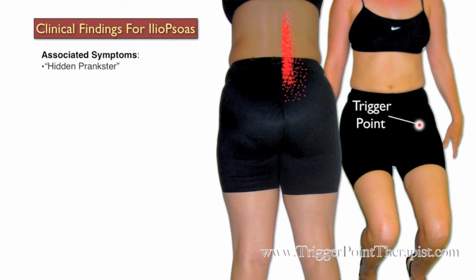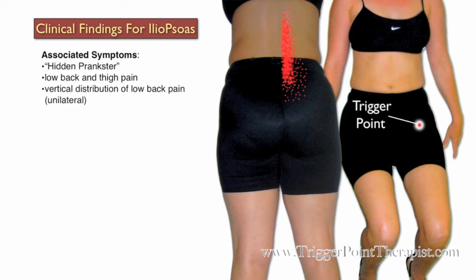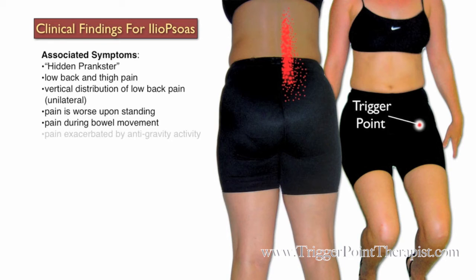Clinical findings for the iliopsoas trigger points: Dr. Travell refers to this muscle as the hidden prankster of lower back pain. Clients may complain of low back pain and thigh pain, and a vertical distribution of lower back pain that is usually unilateral. The pain is worse upon standing. They may also complain of pain during bowel movements, and the pain is exacerbated by any anti-gravity activity such as hanging from a bar. The pain usually diminishes in a recumbent position.